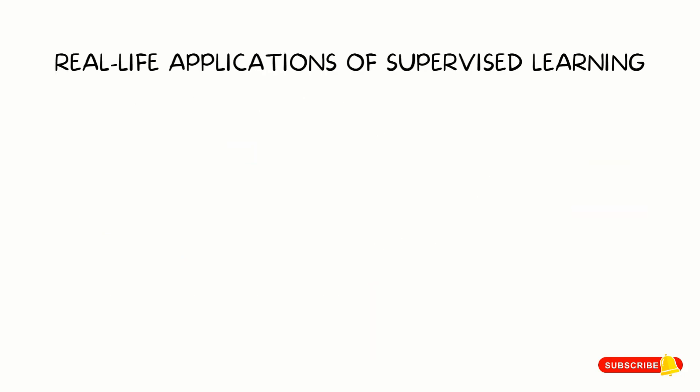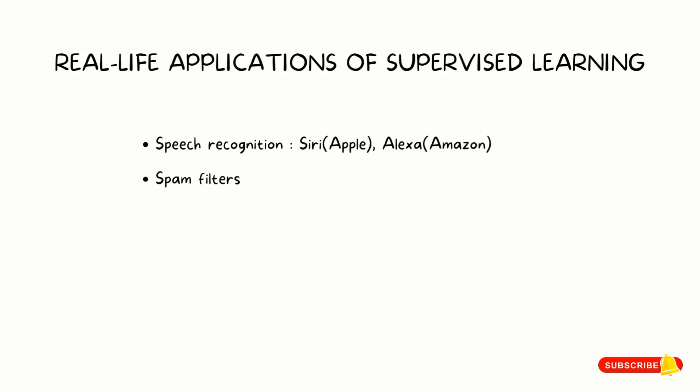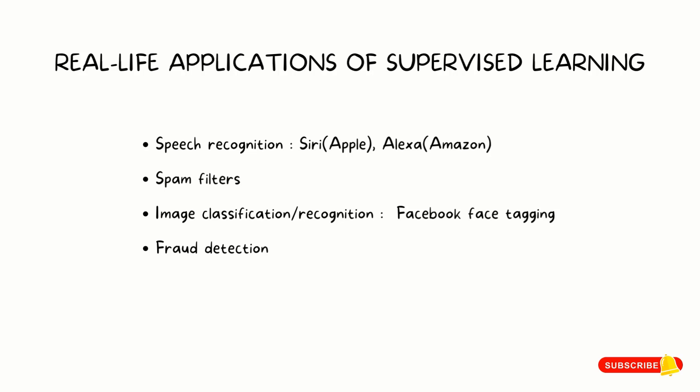Some real-life applications of supervised learning include speech recognition — many voice assistants such as Siri from Apple and Alexa from Amazon use supervised learning algorithms to process spoken commands. Spam filters — many email clients use supervised learning algorithms to filter out spam emails; the algorithms are trained on a dataset of labeled emails to predict whether an email is spam or not. Image classification and recognition — many image recognition systems, such as those used by social media platforms to automatically tag photos, use supervised learning algorithms to classify images. And fraud detection — many financial institutions use supervised learning algorithms to identify fraudulent activities.